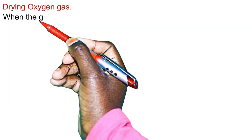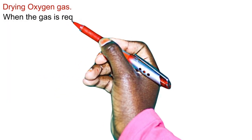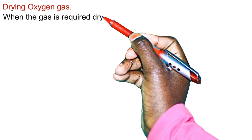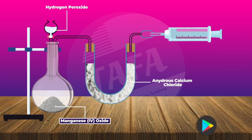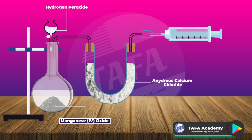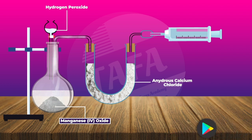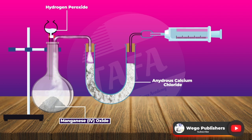The gas is required dry. It can be dried by two ways. The first one is by bubbling it through a U-tube containing anhydrous calcium chloride, which is a drying agent, and then collecting it using a syringe.